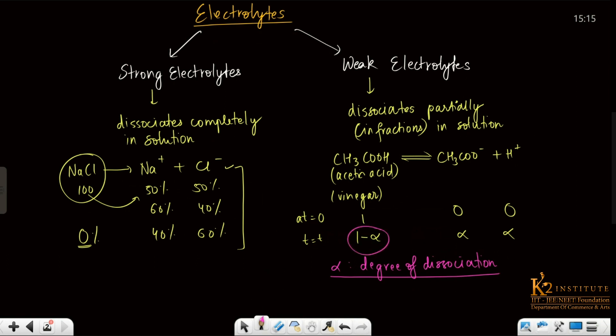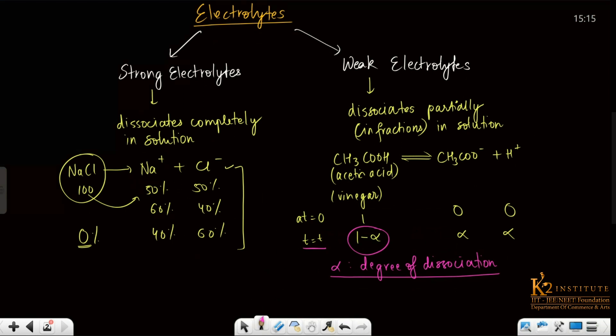In weak electrolytes, 1 minus alpha is the amount of acetic acid that is left at time T — it is not completely zero. This type of electrolyte, where dissociation is partial, we define as weak electrolytes.